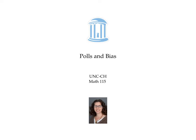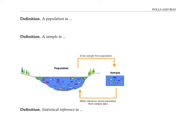This video is about polls and the biases that can make them inaccurate. When an organization like the Pew Research Center conducts a poll to gauge US public opinion on an issue, or to find out how people are going to vote, it's not feasible for them to ask every single person in the US. Instead, they ask a smaller group of people called a sample.